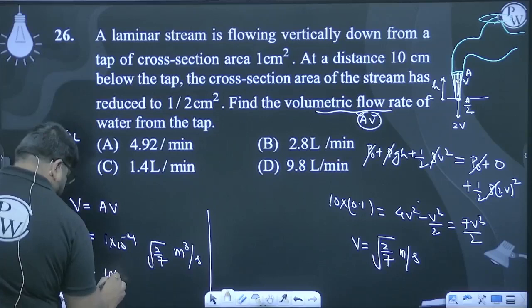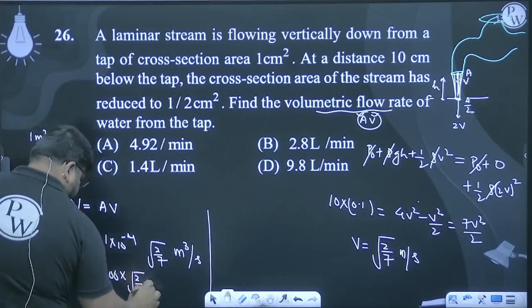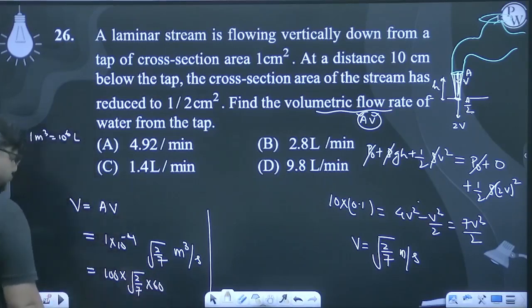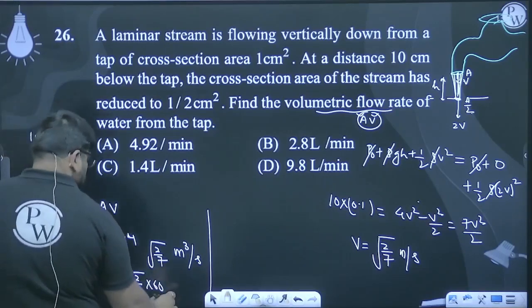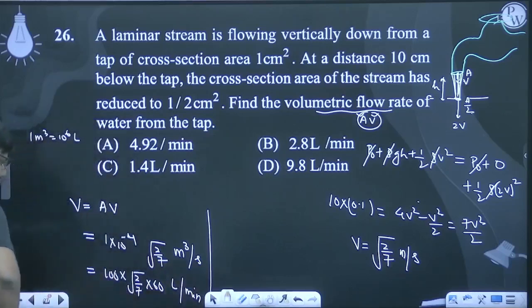10... 100... √(2/7) into 60. So it becomes 600√2/√7.